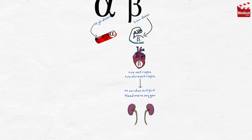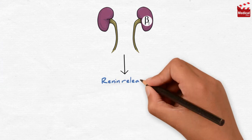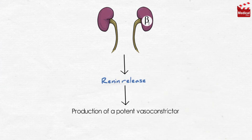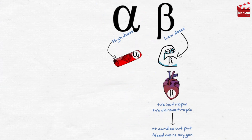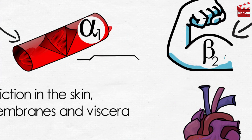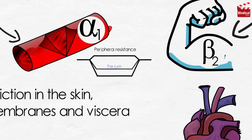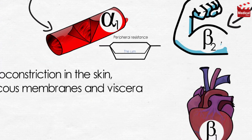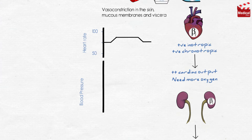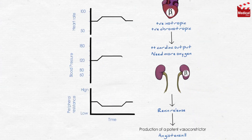Epinephrine activates beta-1 receptors in the kidney causing renin release, which is an enzyme involved in the production of a potent vasoconstrictor called angiotensin 2. Epinephrine causes vasoconstriction in the skin, mucous membranes, and viscera by acting on alpha-1 receptors, which slightly increases peripheral resistance. It dilates vessels going to the liver and skeletal muscle by acting on beta-2 receptors, which significantly decreases peripheral resistance. The net result is a decrease in peripheral resistance. Renal blood flow is also decreased. An increase in heart rate and a decrease in peripheral resistance means an increase in systolic blood pressure, coupled with a slight decrease in diastolic blood pressure.